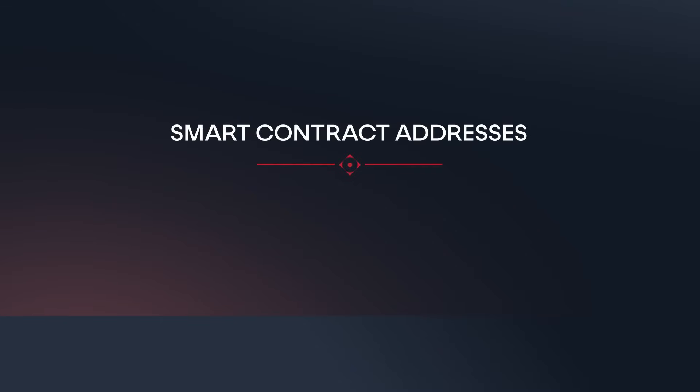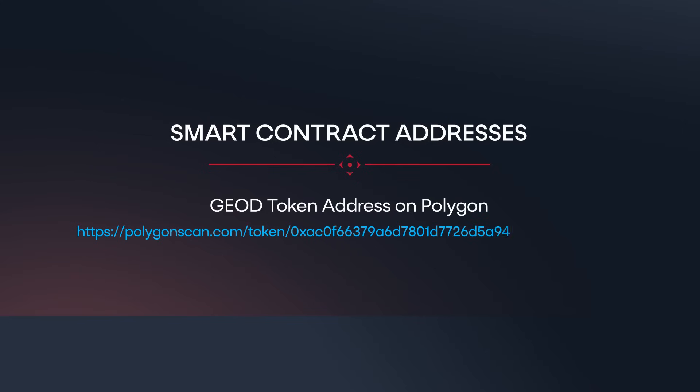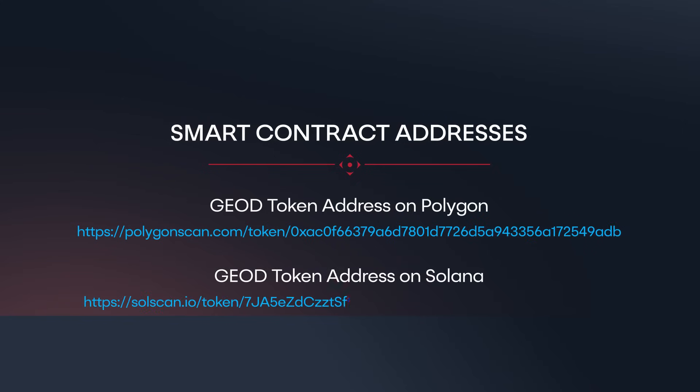You can find the smart contract addresses in the description box below. We have labeled them: GLD token address on Polygon, and GLD token address on Celona.